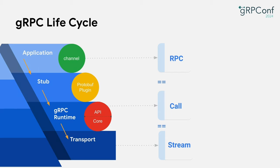gRPC is very simple to use. The application only needs to send a request on the stub that is created from the channel. The stub is at the Protobuf-generated layer, which is also the first layer you will see when using gRPC. The stub creates a call towards the gRPC runtime, which then further creates a stream on the transport. In gRPC, an RPC, a call, or a stream are fundamentally the same concept, just referred to by different names at various stages in their lifecycle.